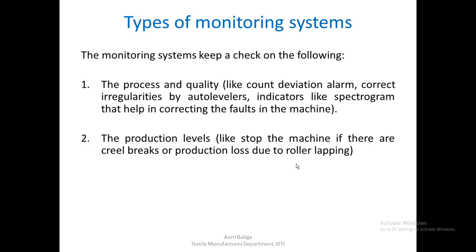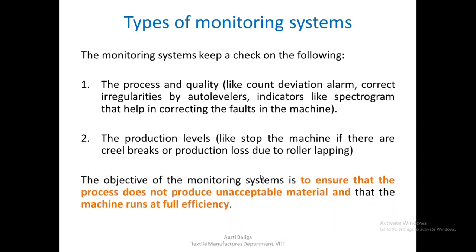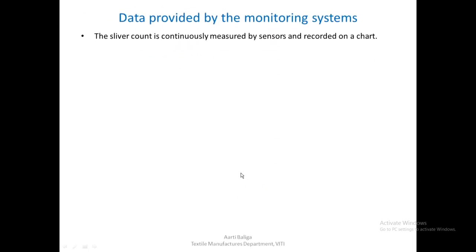Records are kept of all stoppages — how many times the machine has stopped and for what reasons — so that we can analyze them and take appropriate action. The objective of any monitoring system is to ensure that the process does not produce unacceptable material and that the machine runs at full efficiency. Let us now see what kind of data the monitoring system provides.